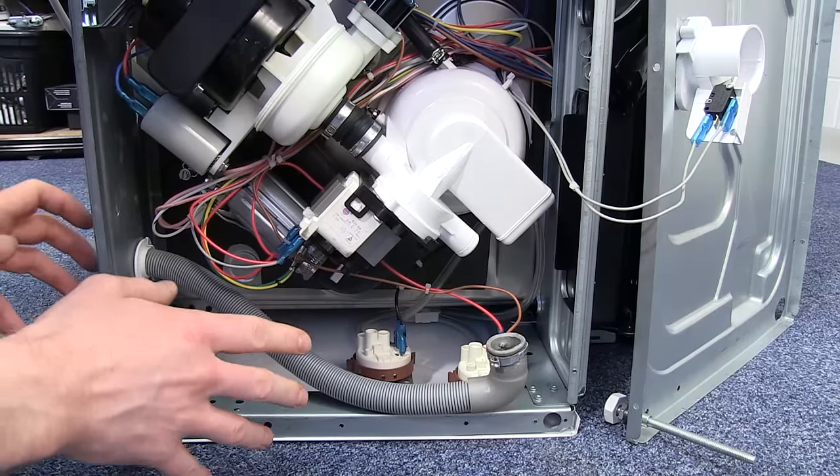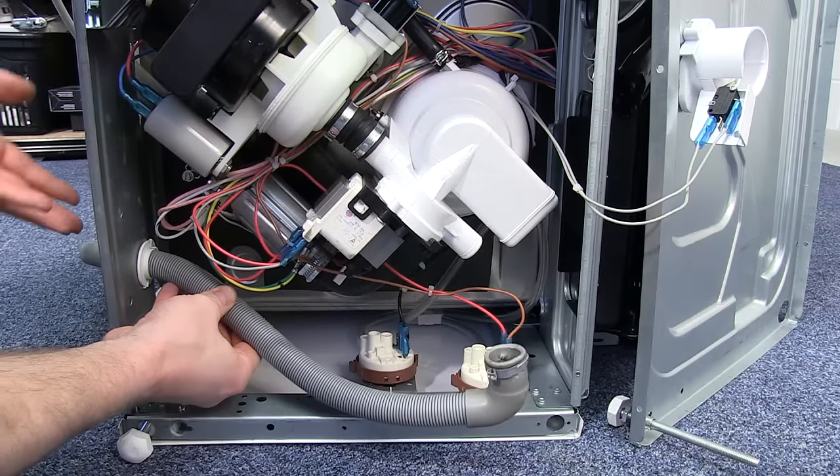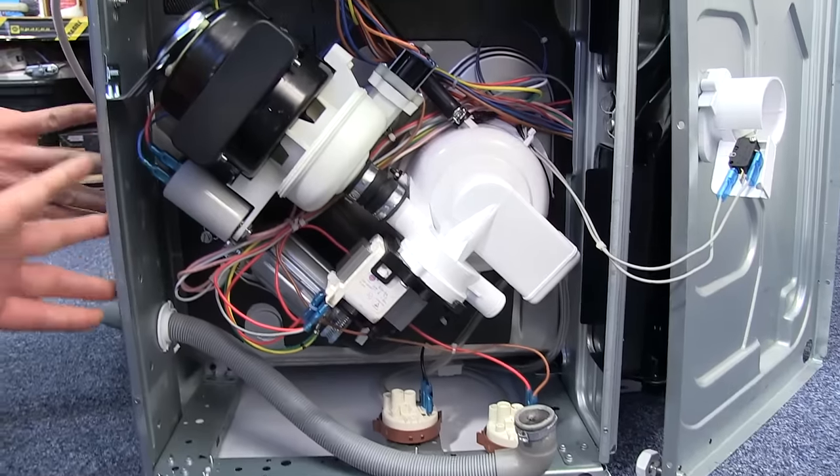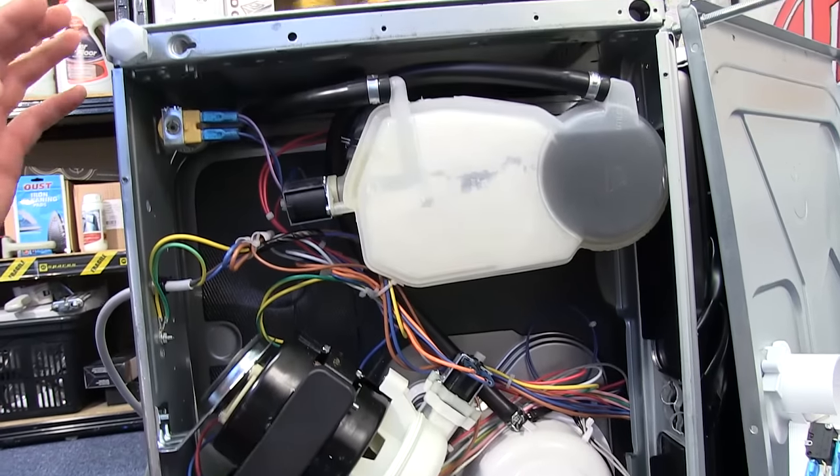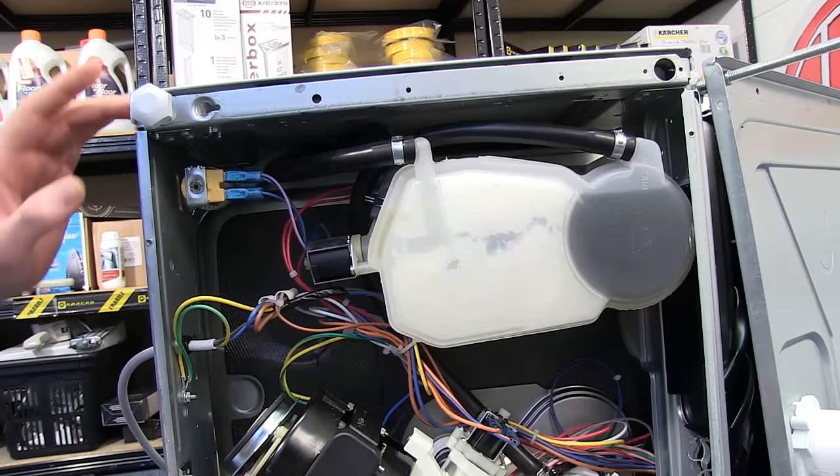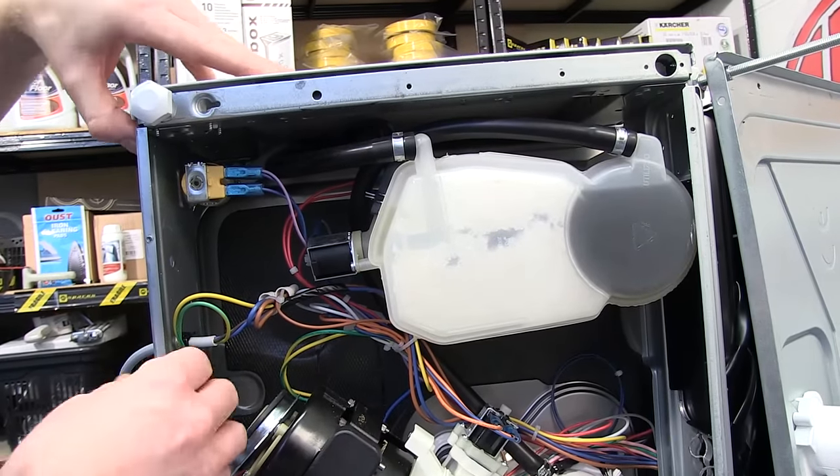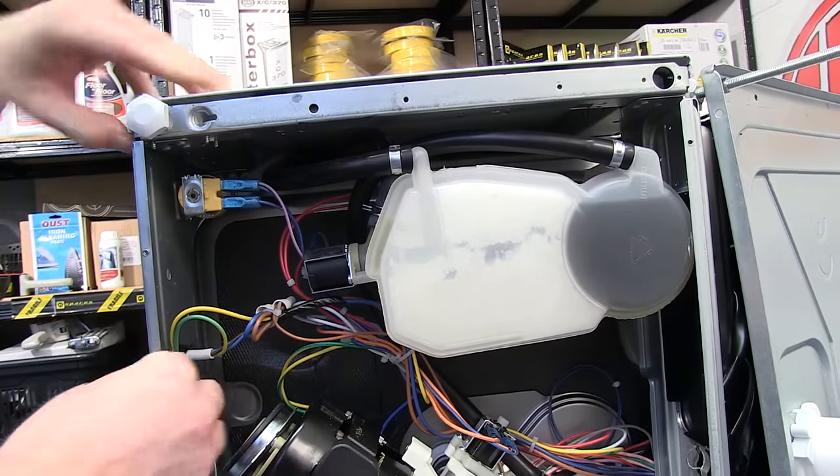The next thing I need to do is to remove the drain hose from the back panel. I need to separate these back panels by undoing the six screws that hold them into place. I also need to undo one of the screws that holds the side panel in to be able to maneuver these back panels out of position.